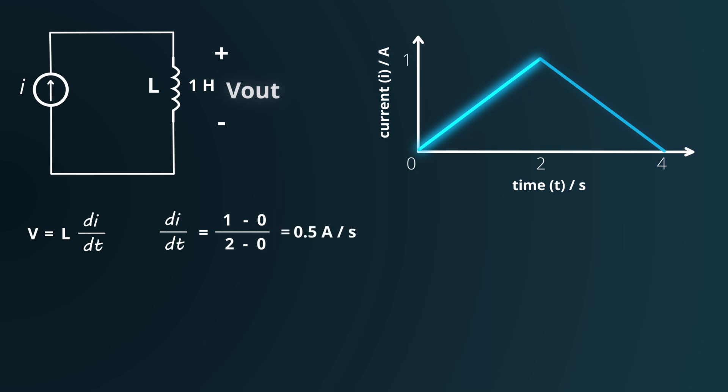Since we already know the inductance, L, plugging the values into the equation, we get the voltage across the inductor during this period as 0.5 volts.